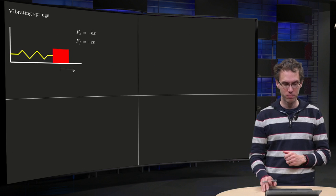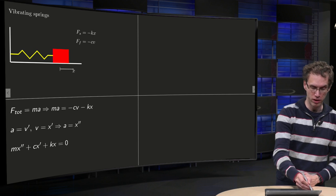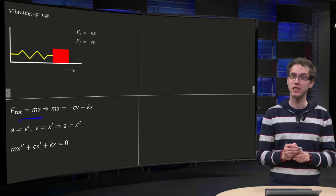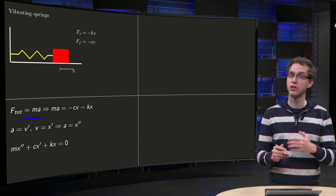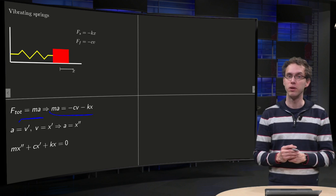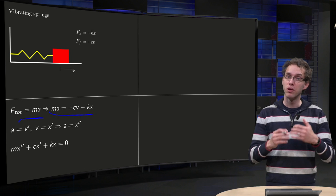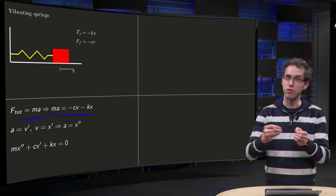Now, what do we know? We know that the sum of the forces, F total equals mass times acceleration. We have two forces, spring force and friction force, so mass times acceleration becomes minus c times v minus k times x, both opposing the movement, pulling it back.